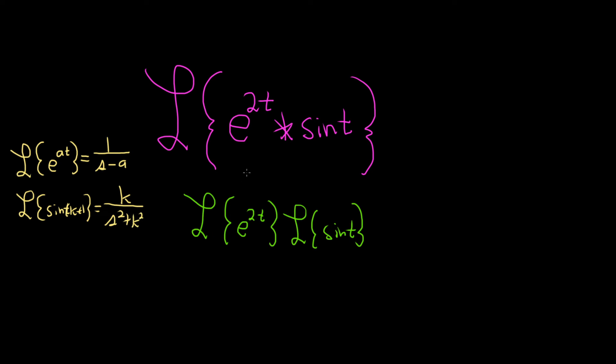So in our problem, k is 1. The first piece will become 1 over s minus 2, where a is 2. And the second piece will be 1 over s squared plus 1 squared.